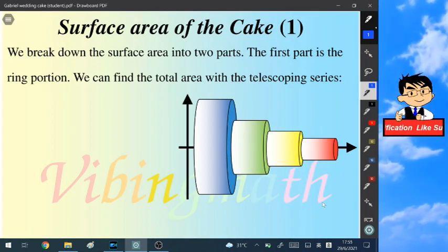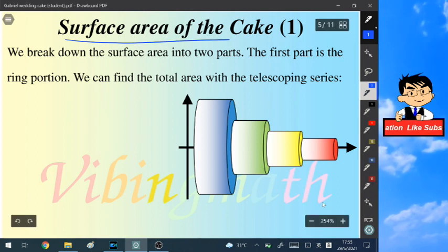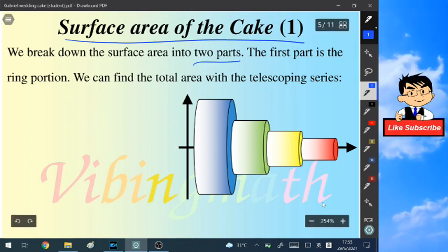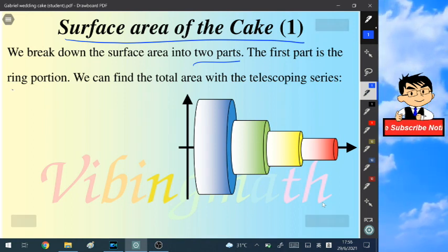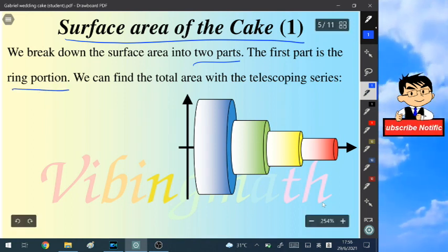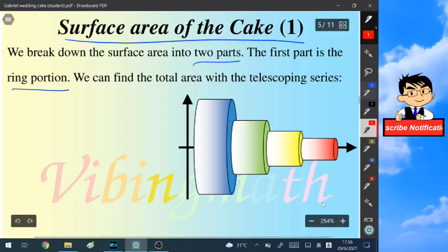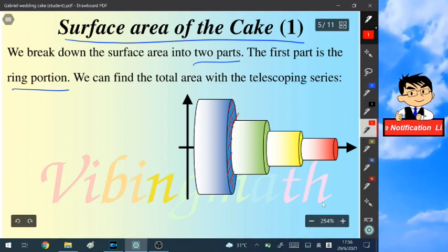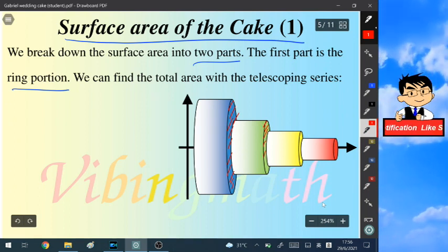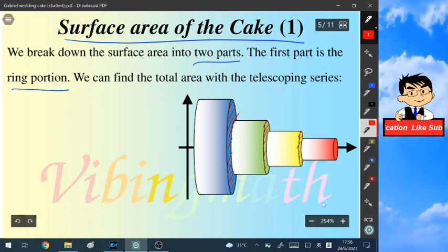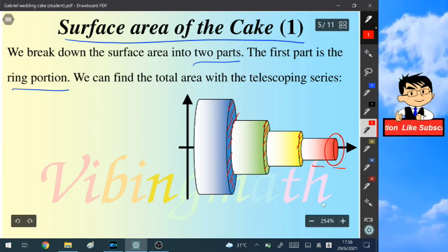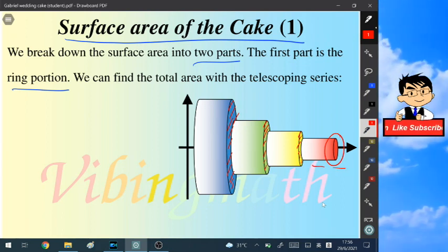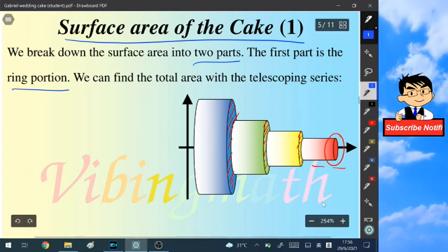For the second part, we are going to calculate the surface area of the cake, and we will divide the process into two parts. The first part is calculating the ring portion. For the first ring, we are calculating this large ring, and then the middle ring, and then the small ring. And then we are going to do it infinitely to find the total area of all the rings.